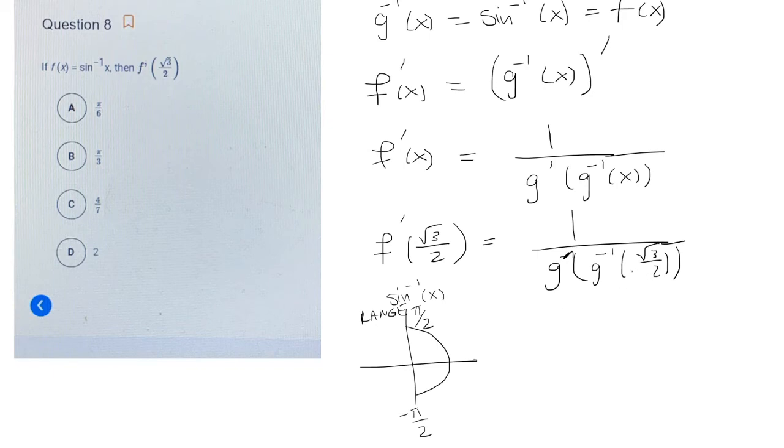So we want root 3 over 2, which is up here. That's 1 half comma root 3 over 2. The y value, I'm sorry, the angle that corresponds to this point is pi over 6, or pi over 3, which is 60 degrees.